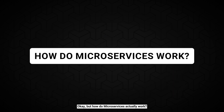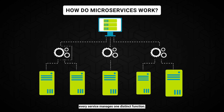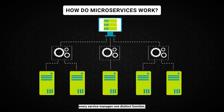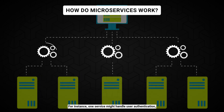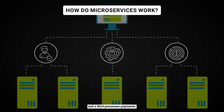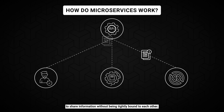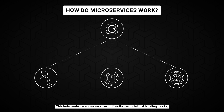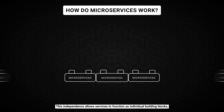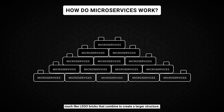How do microservices actually work? In a microservices architecture, every service manages one distinct function. For instance, one service might handle user authentication, another manages product data, and a third processes payments. These services use APIs — think of them as digital messengers — to share information without being tightly bound to each other. This independence allows services to function as individual building blocks, much like Lego bricks that combine to create a larger structure.